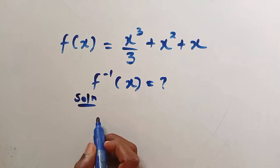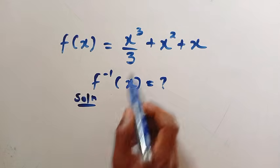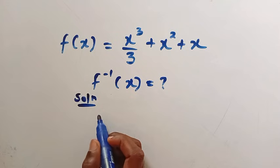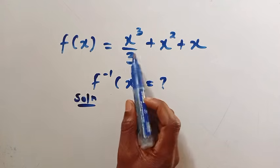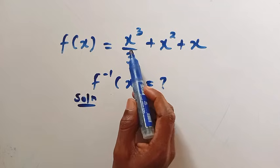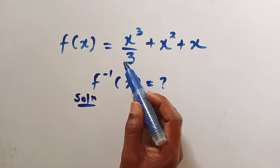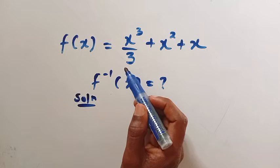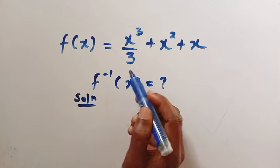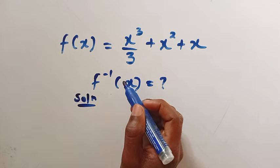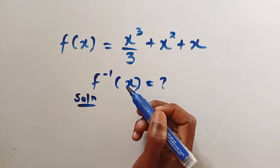First, we want to find f inverse of x. Let's try and understand this function. Since f is a cubic function with the power of 3, a cubic polynomial, we can't get a simple algebraic expression for f inverse of x like this, which will be in a general form of solving cubic equations.